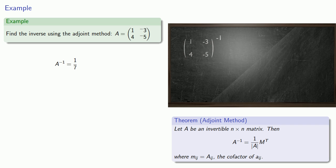Since the cofactors will be the minors of each entry multiplied by plus or minus 1, depending on where in the matrix they are located, it's convenient to set down the pluses and minuses first and then compute the determinants. So we'll set down our checkerboard pattern of plus and minus, and then we'll find our minors.